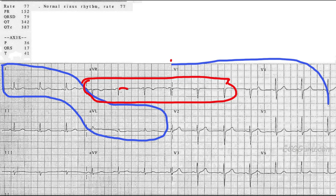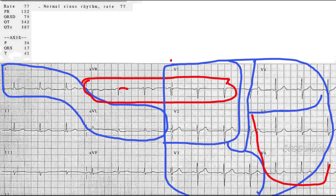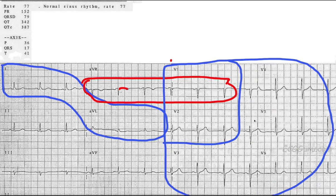The anterior wall is represented by all the leads on the right of the paper. It's such a large area that we break it down into segments: V1 and V2 show us the septal area of the anterior wall. Screen them for ST changes. Then look at V3 and V4 together and screen for ST changes. Then look at V5 and V6 together and check for ST changes. If we find ST elevation, we would possibly be looking at a diagnosis of an anterior wall MI.